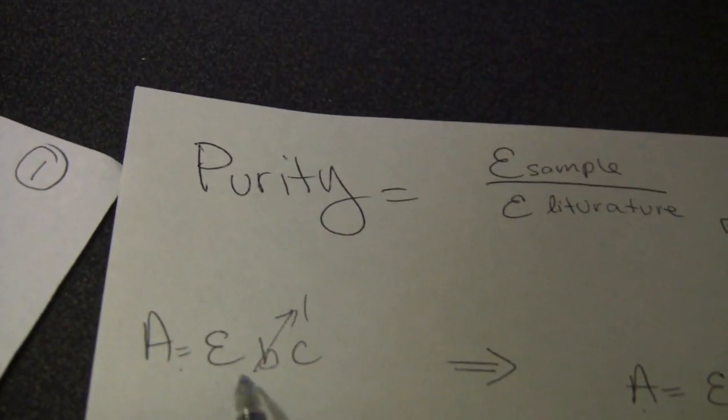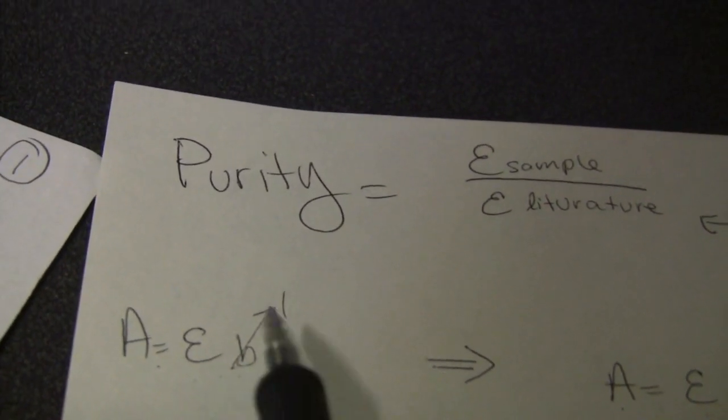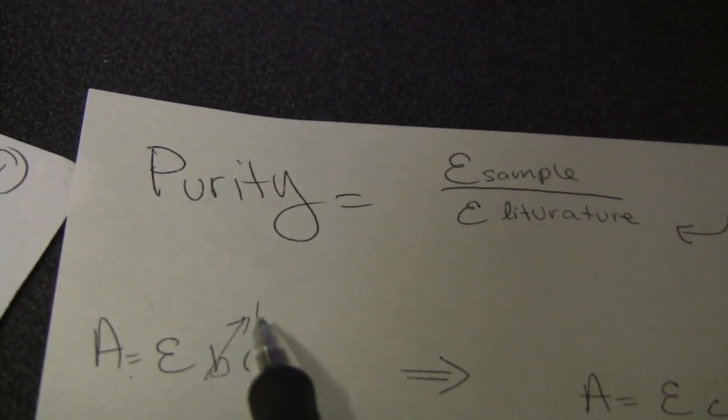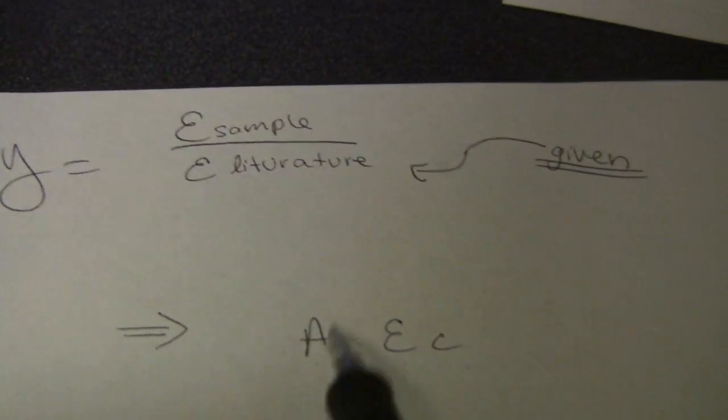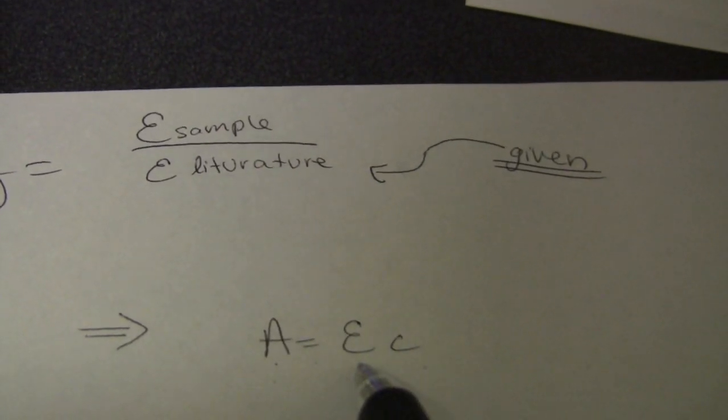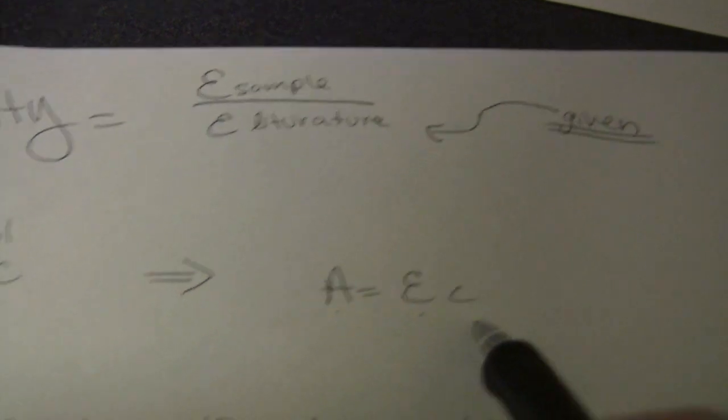Absorbance equals molar extinction coefficient times cell path length times concentration, and knowing that the cell path length will be one centimeter. The formula can be easily rewritten as absorbance equals molar extinction coefficient times the concentration.